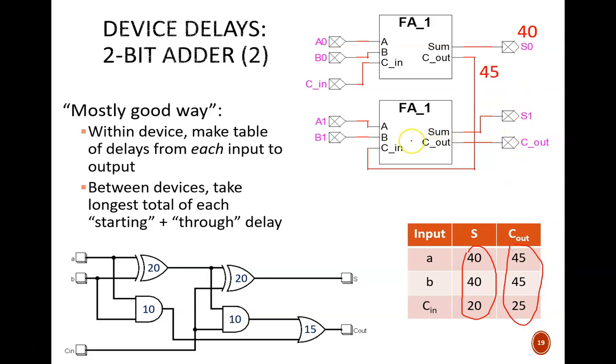The next device is the trickier one. Here we must consider the largest total of starting plus through delay from each of the inputs. For output S, input A1 has a starting delay of 0 plus a through delay of 40 for a total of 40. Input B1 is the same. CN, however, has a starting delay of 45 plus a through delay of 20 for a total of 65.